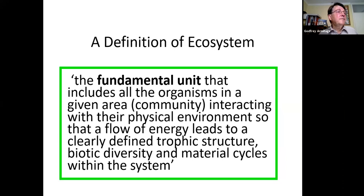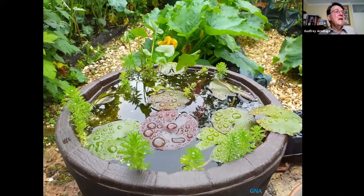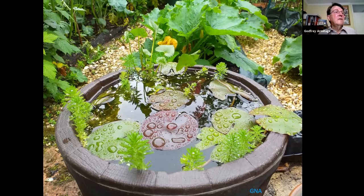For example, my mini pond. Light energy enters; heat energy of respiration is lost from organisms. Nutrients enter in the form of carbon dioxide, dust, and dead leaves, and loss of nutrients occurs during occasional cleaning or removal of dead leaves, or when adult insects emerge and leave — but mostly the nutrients recycle within the pond.